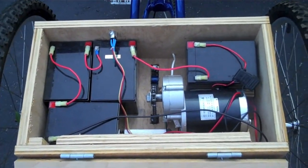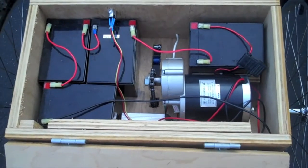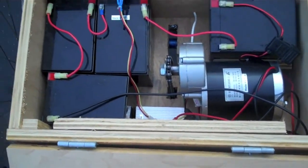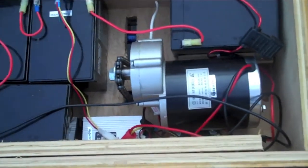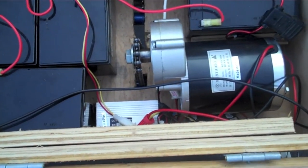Okay, here we have the internal components of my electric tricycle. Right here we have the motor. It's a 36 volt motor rated at 600 watts.